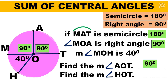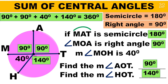To find the measure of angle HOT: since arc MHT is a semicircle, arc MHT also measures 180 degrees. Therefore, 180 minus the 40 degrees of angle MOH gives angle HOT equal to 140 degrees. Adding all angles: 90 plus 90 plus 40 plus 140 equals 360 degrees.